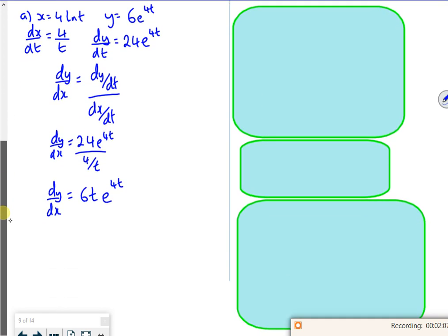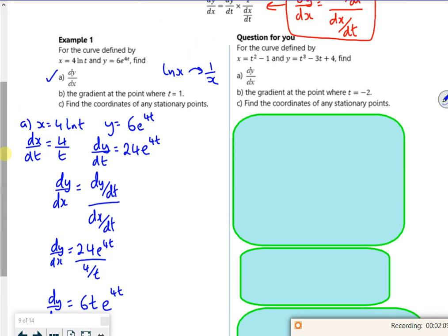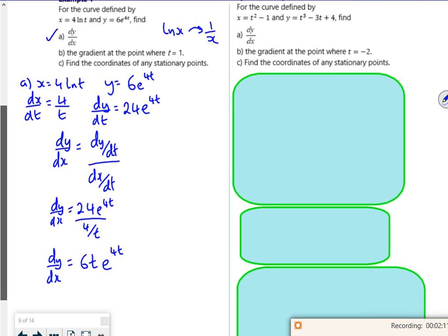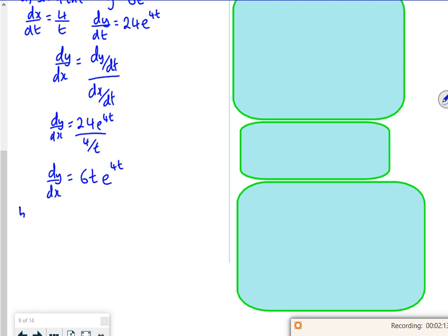Oh, I've got lots in this one. You have to write small on this one. So I've got that. Find the gradient when t is 1. Oh, that's alright then. So when t is 1, dy by dx is 6 lots of 1, e to the 4 lots of 1. So that's just 6 e to the 4. So that's fine.